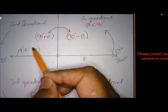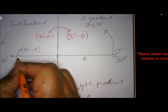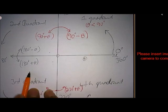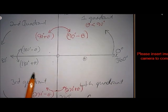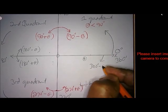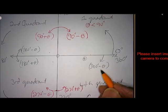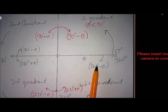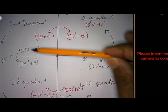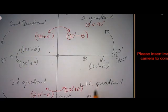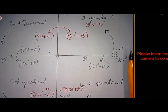So now we've got two different angles for the second quadrant. We also have 180 plus theta for the third quadrant — so two angles for the third quadrant. And 360 minus theta for the fourth quadrant. Those are the angles that move from the x-axis.